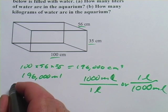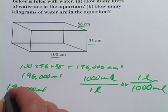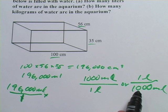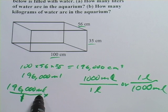So I can convert this by taking my number, 196,000 milliliters, and make that a fraction. Multiply it by one of these. And I want to choose the one where milliliters is on the bottom, so it'll cancel with the one that's on the top here.